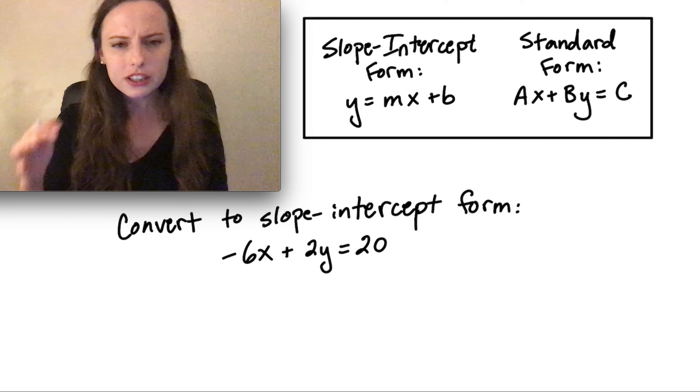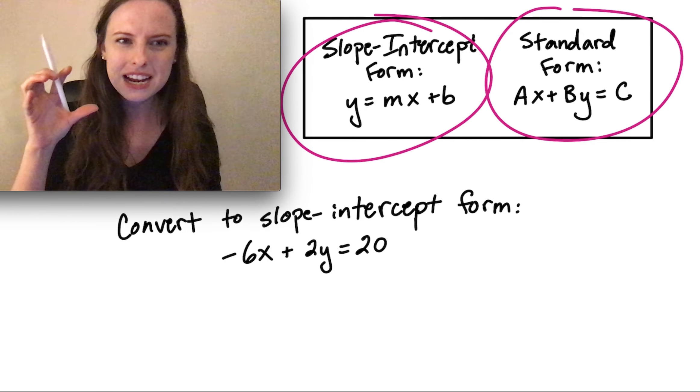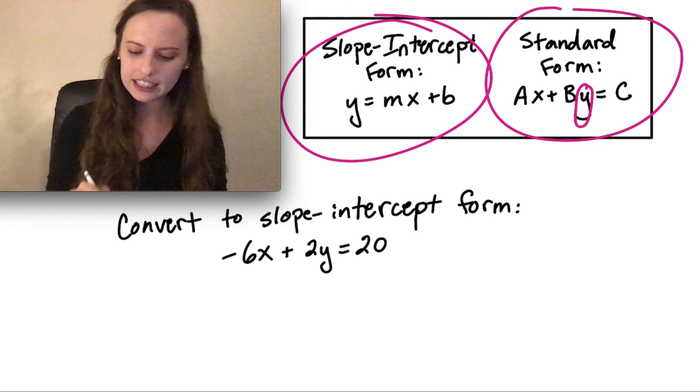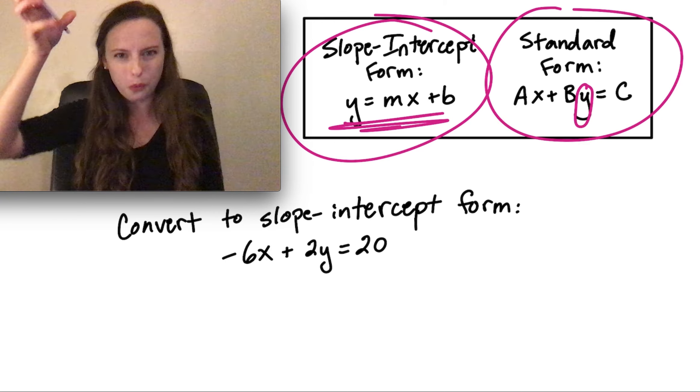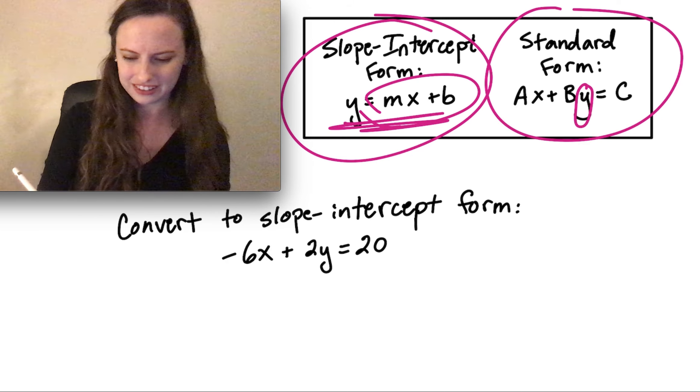When we're converting from standard form into slope-intercept form, our main goal is going to be to isolate this y so that it gets into this form where you have y by itself equals everything else on the other side.